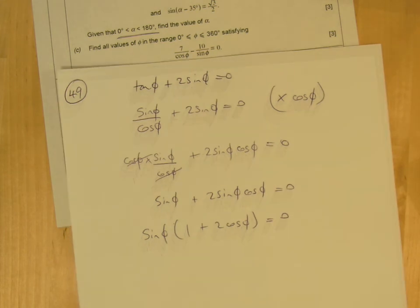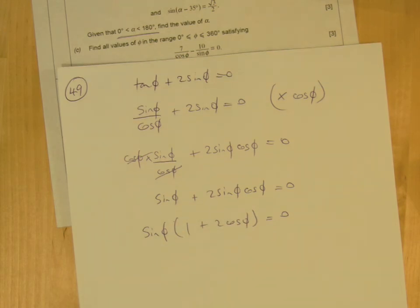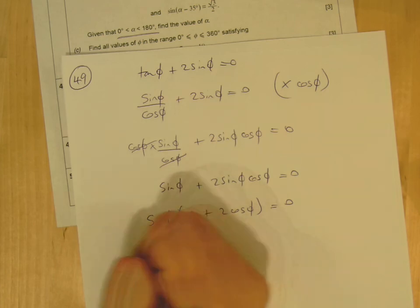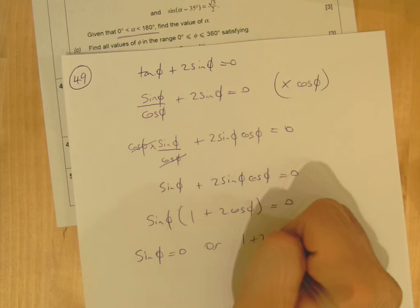You don't want to divide through by sine because sine could equal zero. You should factorize out sine like I've done, and then you say this times this is zero, so either the first thing is zero or the second thing is zero.